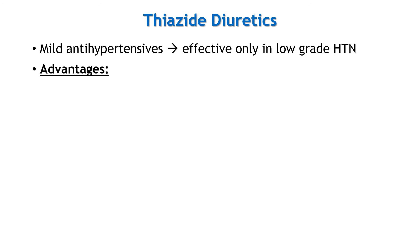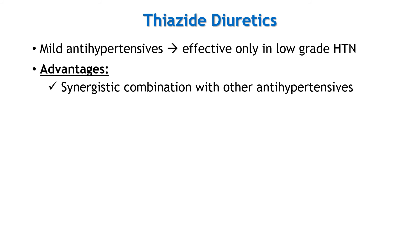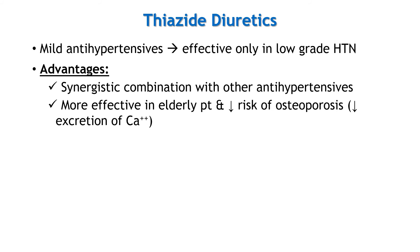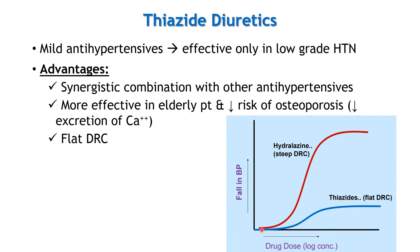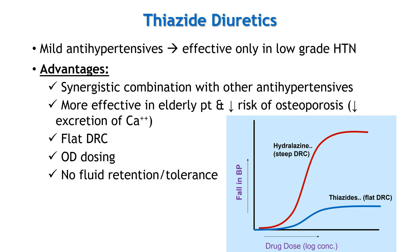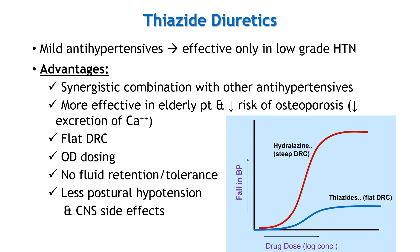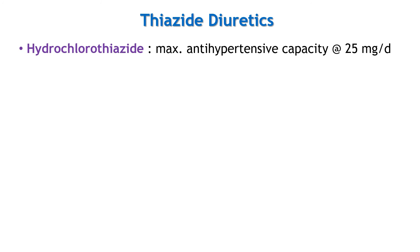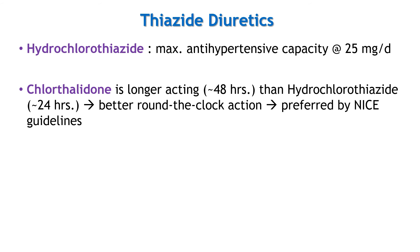The advantages of thiazides include synergistic combination with most other antihypertensives, but they should be avoided with beta blockers because both increase the risk of diabetes mellitus. They are quite effective in elderly patients and also decrease the risk of osteoporosis by reducing excretion of calcium ions. Thiazides have a flat dose-response curve — meaning that if we increase the dose after a certain level, the effects will not increase much, making them safer compared to drugs with steep dose-response curves. Other advantages include once-daily dosing, no fluid retention or development of tolerance, less postural hypotension and CNS side effects, and low cost. The maximum antihypertensive capacity of hydrochlorothiazide is seen at 25 mg per day. Bendroflumethiazide and chlorthalidone are longer-acting thiazides, and because of this, chlorthalidone is the preferred thiazide diuretic by NICE guidelines.